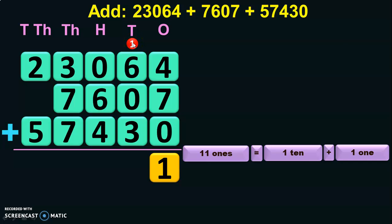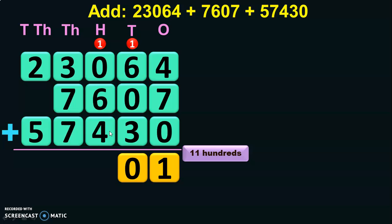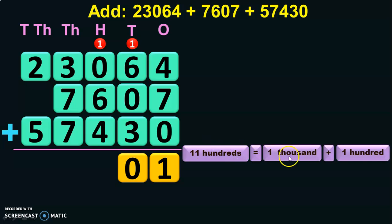Add the digits in the tens place: 1 plus 6 is 7, 7 plus 0 is 7, and 7 plus 3 is 10 — so you get 10 tens. Regroup 10 tens: you get 1 hundred plus 0 tens, so the 0 will be maintained in the tens place and the 1 hundred is taken as a carry-over to the hundreds place. Now add the digits in the hundreds place: 1 plus 0 is 1, 1 plus 6 is 7, and 7 plus 4 is 11 hundreds. 11 hundreds can be written as 1 thousand plus 1 hundred, so 1 is retained in the hundreds place and 1 thousand is carried over to the thousands place.